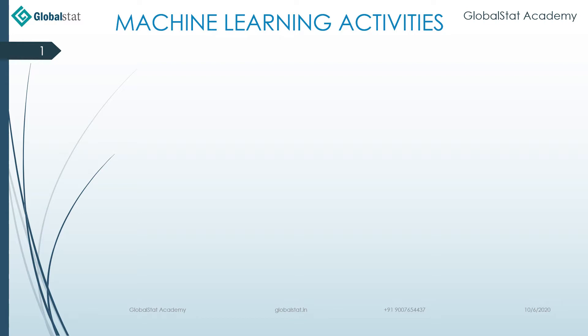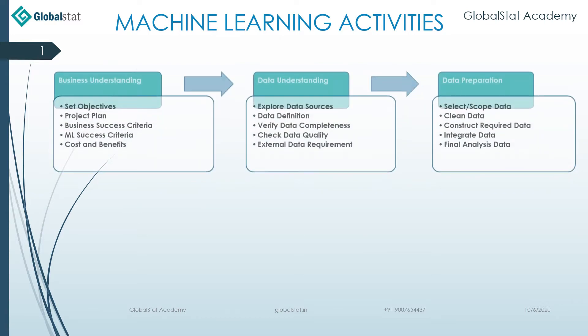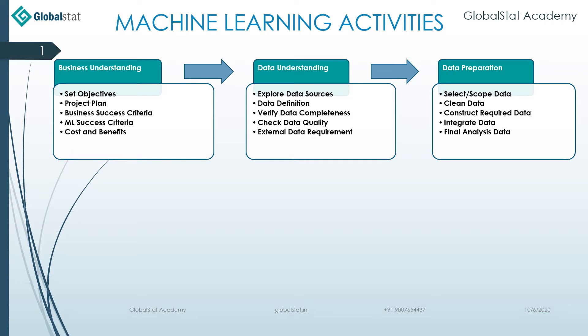We are going to talk about different machine learning activities. We will start with business understanding — we need to set objectives, then do the project planning, business success criteria, machine learning success criteria, and cost and benefit analysis.